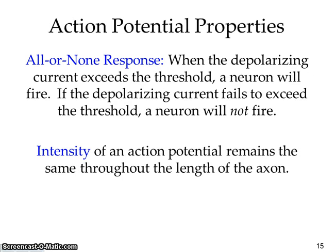The all-or-none response means either the neuron is going to fire or it's not going to fire. The intensity of the action potential remains the same throughout the length of the axon. It's kind of like a gun — you can keep pulling on that trigger as hard as you want, but it's not going to make it fire any faster. Either it's going to happen or it's not going to happen.